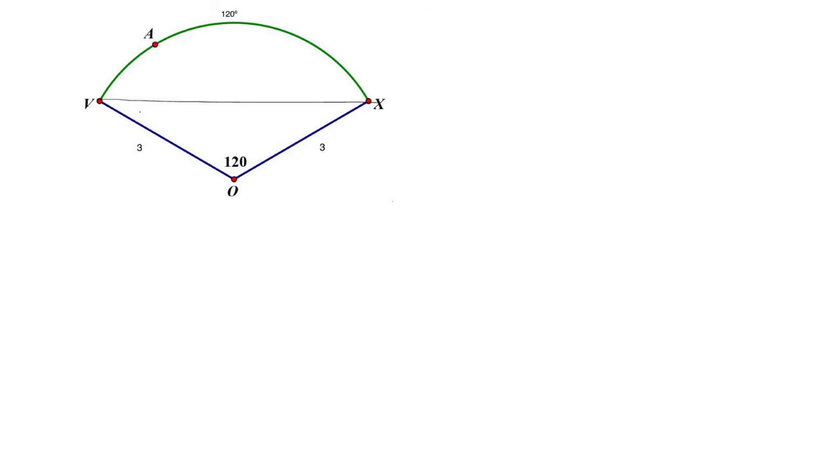Let's find the area of the triangle. Notice that this is an isosceles triangle with the two sides being congruent. This is 120, so that means these two angles are also congruent. And we know that all the angles have to add up to 180.